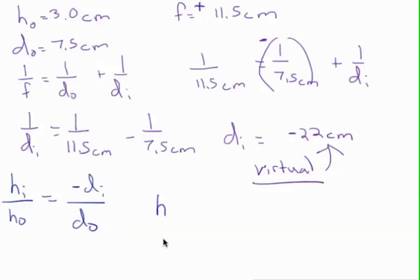We plug in. We have HI divided by 3 centimeters equals negative, and then this number is negative, 22 centimeters divided by 7.5 centimeters. Those happen to cancel out.